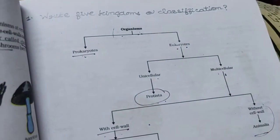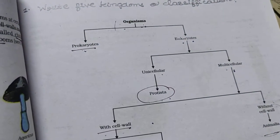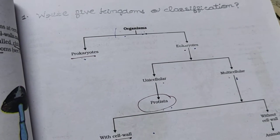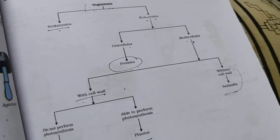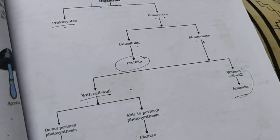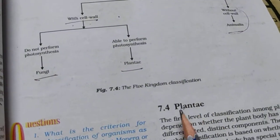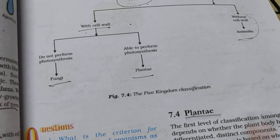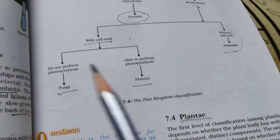Good morning 9th class. Today is 29th October, Thursday. Today we discuss further chapter - that is Chapter: Diversity in Living Organisms. Now we start the topic on plants.